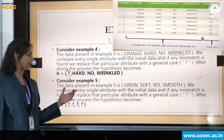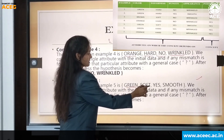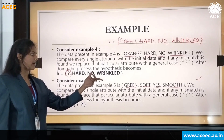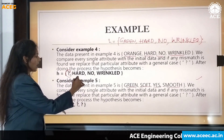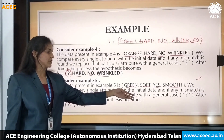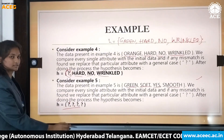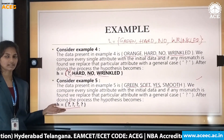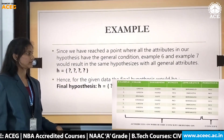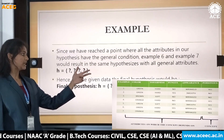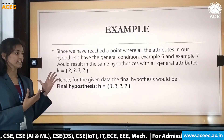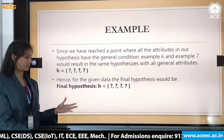For example five, the data is green, soft, yes, and smooth. Each attribute differs from the current hypothesis, so hard, no, and wrinkled are all replaced with question marks. The final hypothesis becomes a set of all question marks. Since we have reached the most general condition, examples six and seven also result in the same fully general hypothesis. Therefore, for the given dataset, the final hypothesis is {?, ?, ?, ?}.